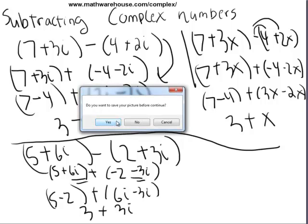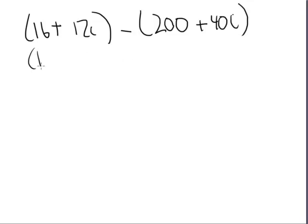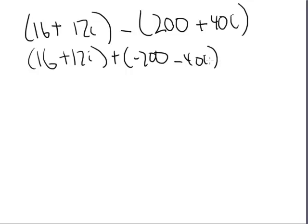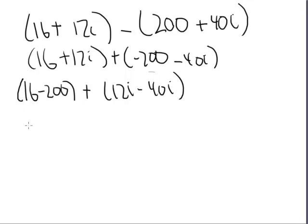Let's do one more problem. Let's do the following subtraction: 16+12i minus 200+40i. Step 1, let's distribute the negative sign, -200-40i. And now regroup, 16-200 plus 12i-40i. And now I'll simplify. 16-200 is -184, and 12i-40i is -28i.